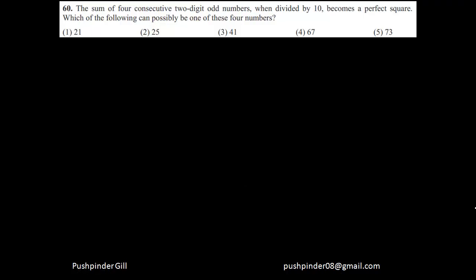The sum of four consecutive two-digit odd numbers, when divided by ten, becomes a perfect square. Which of the following can possibly be one of these four numbers?